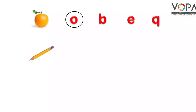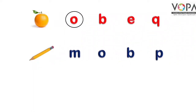अगली picture है Pencil की। इसके आगे letters दिये गए हैं: M for Monkey, O for Orange, B for Ball, और P for Pencil। हमें पता है कि Pencil यह word P से शुरू होता है, इसलिए हम लोग यहाँ P को encircle करेंगे।